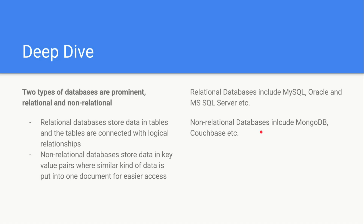The schema representation — or how data is stored in the database — can be different and can range from tables to documents to something else like JSON. Based on that schema representation or storage method, we have two prominent types of databases in the market: relational and non-relational.